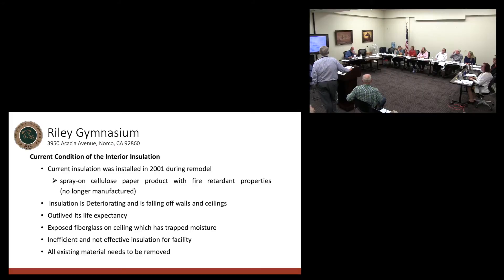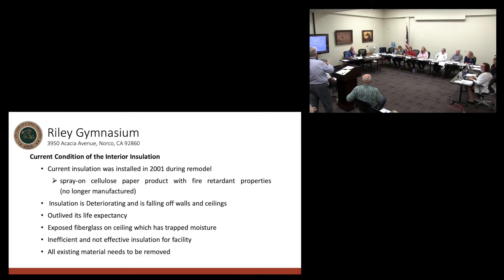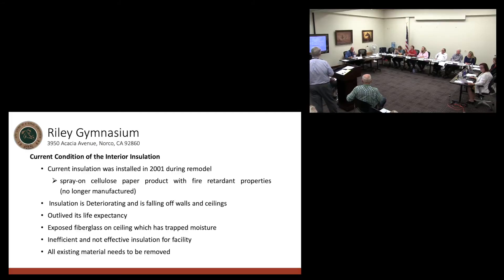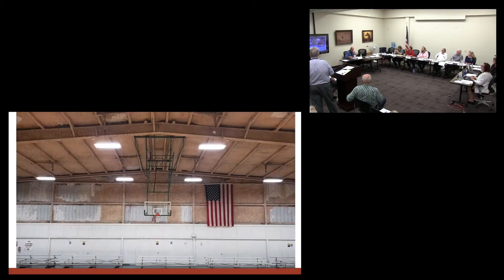The insulation is deteriorating and falling off walls and ceilings — it has outlived its life expectancy. Spray-on cellulose typically lasts about 10 years before needing replacement. There is also exposed fiberglass on the ceiling, which has trapped moisture, making it ineffective. Existing materials provide inadequate R-value — R-value is the thermal rating that measures resistance to heat transfer, keeping the space cooler or warmer. The old cellulose paper did not have a high R-factor.